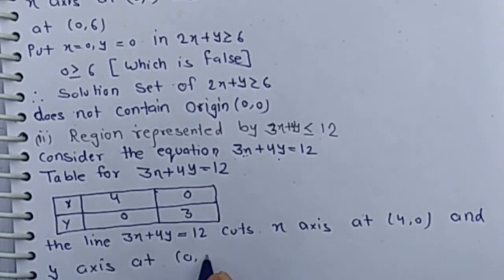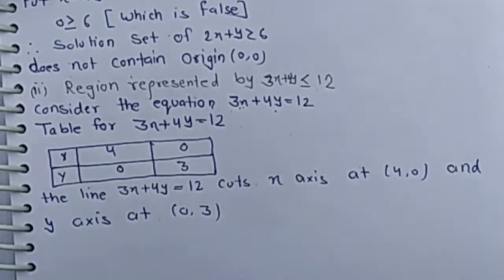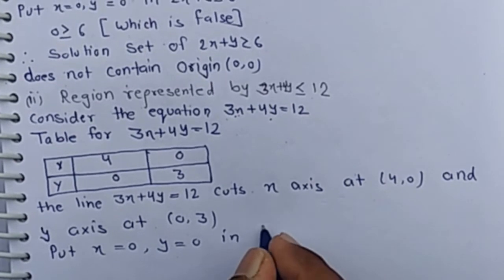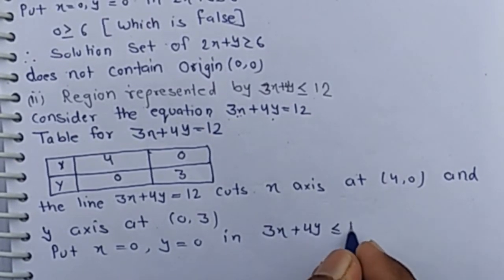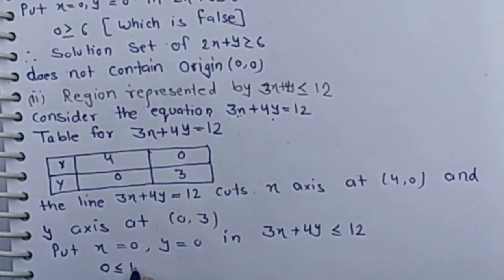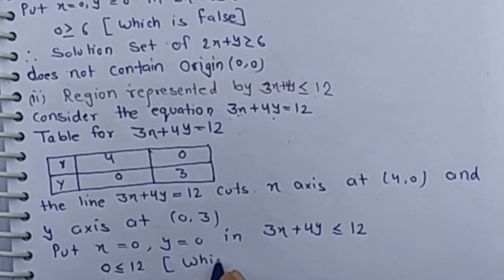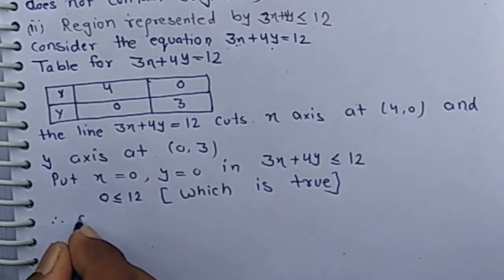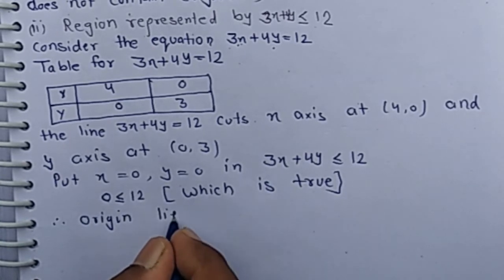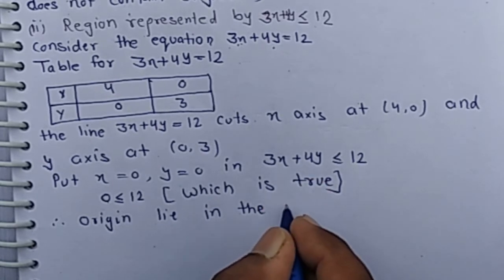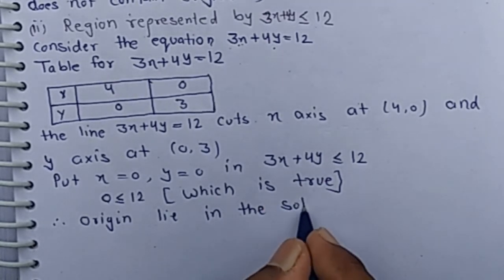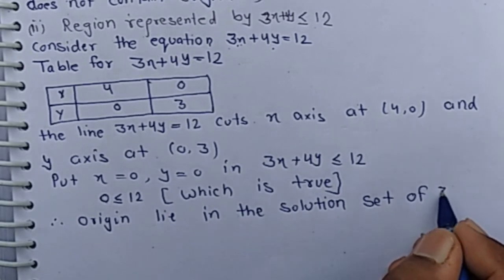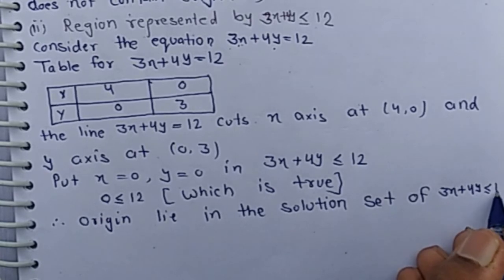Now we put x equals 0 and y equals 0 in the given inequality 3x plus 4y less than or equal to 12. We get 0 is less than 12, which is true. It means the origin lies in the solution set of 3x plus 4y less than or equal to 12.